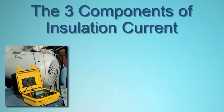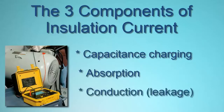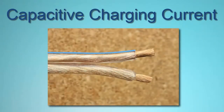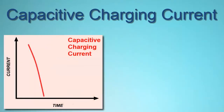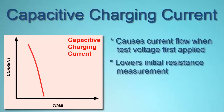To properly interpret test results, it's important to understand that the total current flowing through the insulation consists of three components: capacitive charging current, absorption current, and conduction or leakage current. When two conductors are in close proximity separated by an insulator, they can act as a capacitor. When test voltage is first applied, this capacitive charging effect results in current briefly flowing through the conductors until the voltage across the insulation reaches the test voltage. Consequently, the initial resistance measurement will be relatively low and then quickly rise as the capacitance becomes fully charged.